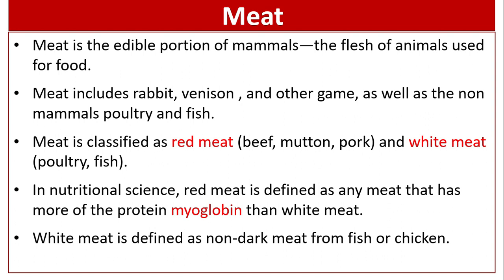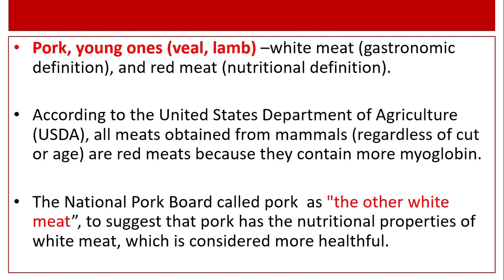In nutritional science, red meat is defined as any meat that has more of the protein myoglobin than white meat. White meat is defined as non-dark meat from fish or chicken. Pork — young ones of cow is known as veal, and sheep is known as lamb. According to the USDA, all meats obtained from mammals regardless of cut or age are red meats because they contain more myoglobin.